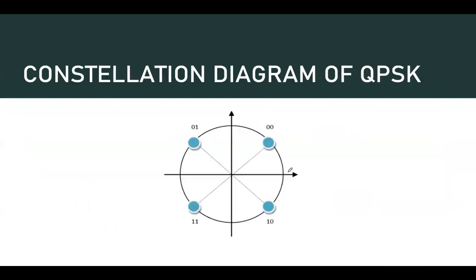This is the constellation diagram for QPSK. Since we have four different combinations, each combination is represented at a different phase angle: 45 degrees, 135 degrees, minus 135 degrees, and minus 45 degrees.